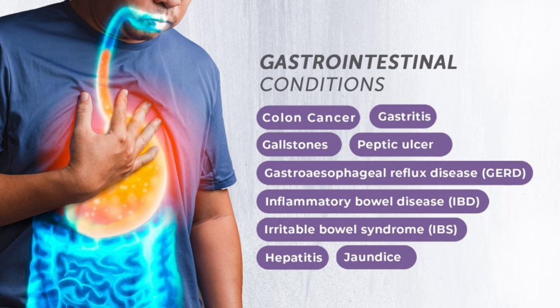Acute ascending cholangitis is infection or inflammation of the biliary tract. Charcot's triad: fever, right upper quadrant pain, and jaundice. Patient may also have hypotension and leukocytosis. Diagnosis: ultrasound and blood cultures. Management: IV fluids, broad-spectrum antibiotics, treat coagulopathy. If obstruction is due to a stone, perform ERCP to relieve the cause.